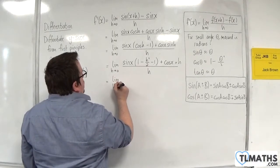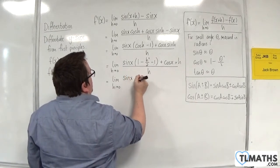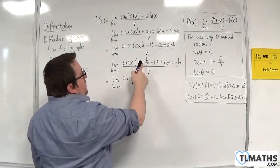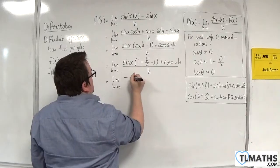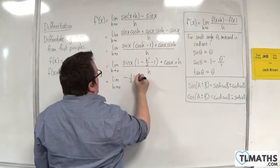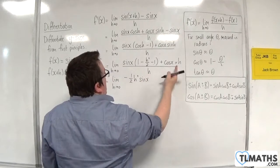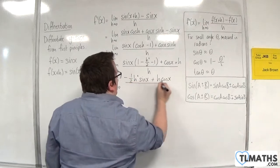So we have the limit as h tends to 0 of sin x times sin x. Now we've got 1 take away 1, so that's gone. So we've got minus h squared over 2. So I'll put that out the front. Minus a half h squared times sin x, and we've got plus h cosine x, and that's all over h.